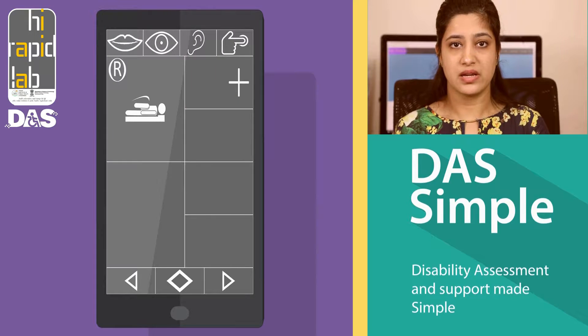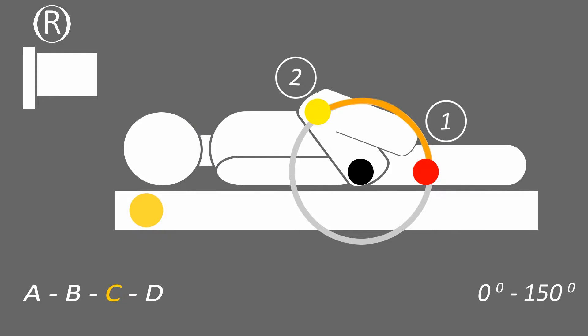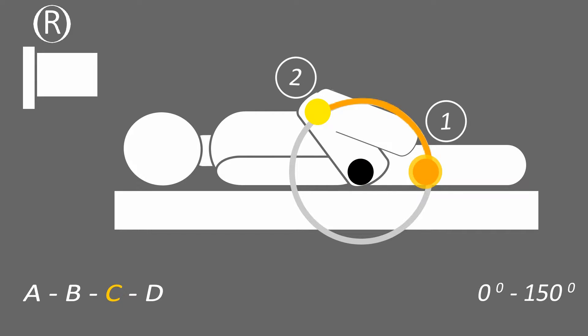Test number one is flexion of hip. Click the plus icon to conduct the test; the Argon application will open. Position of patient: lying supine with hip and knee in zero degree neutral extension and rotation. Position of assessor: standing or sitting at the test site facing the patient. The Argon application on the tablet should be held and positioned as an overlay over the joint. The center black dot should be at the lateral aspect of hip over the greater trochanter of the femur.